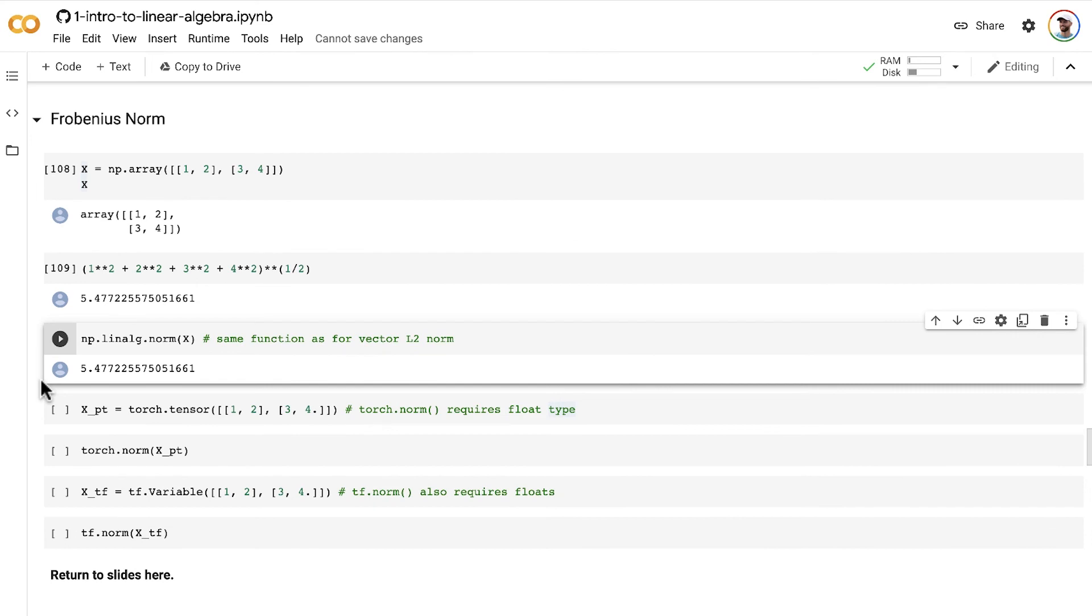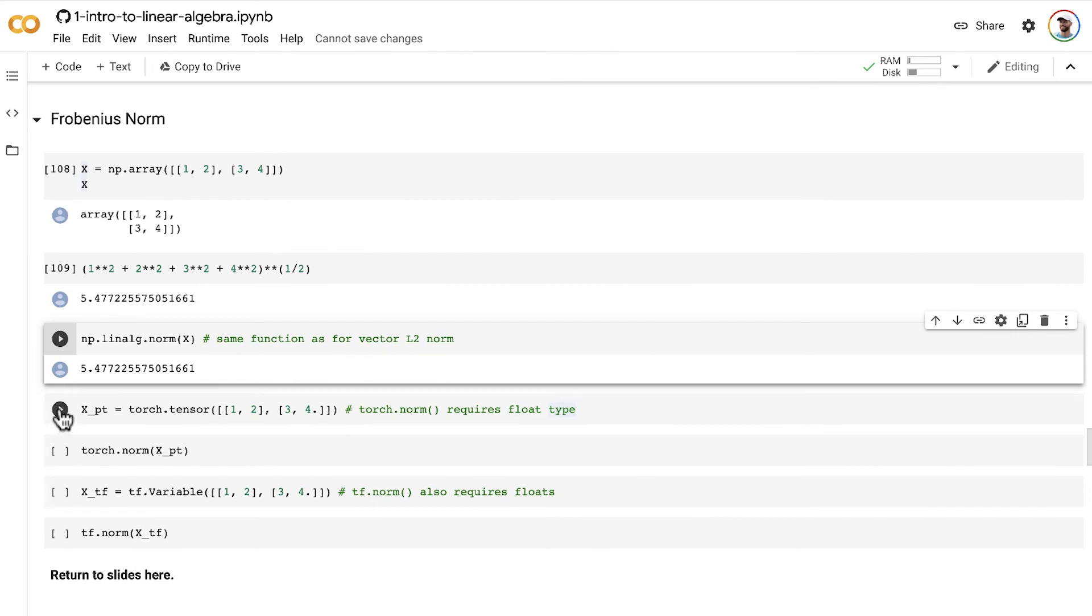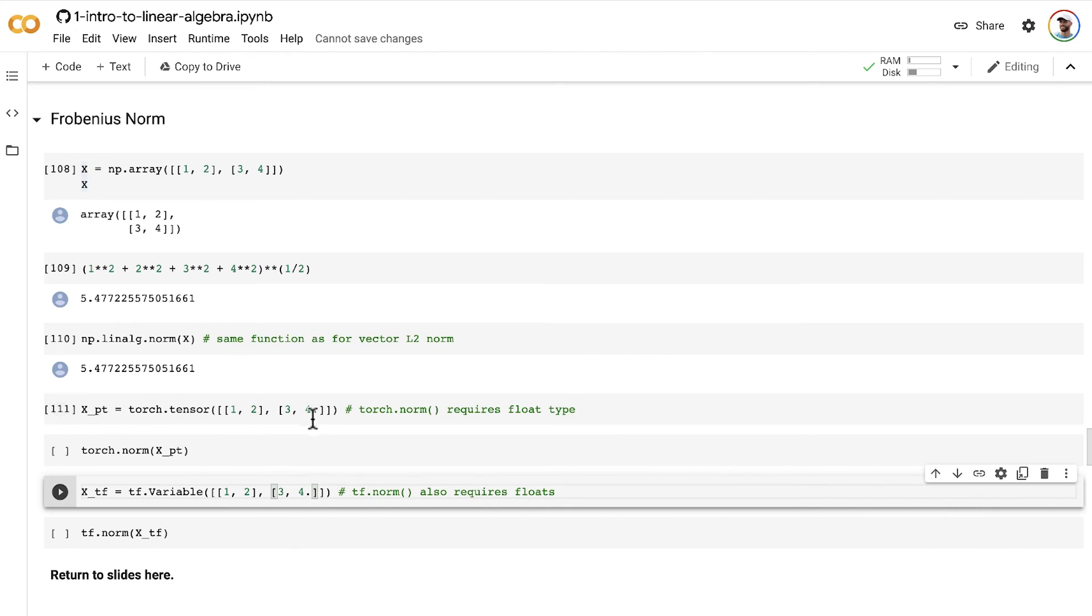And quickly, here's how we can do it in PyTorch and TensorFlow as well. So note that if you're using PyTorch or TensorFlow norm methods, you need to have your matrix type, your tensor type more generally, be a float. So while NumPy works on integer-typed tensors, PyTorch and TensorFlow both require floats. So I'm just adding a period here to indicate that these should be float-typed tensors in either case.